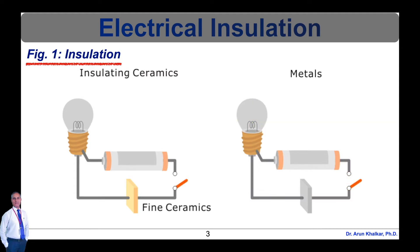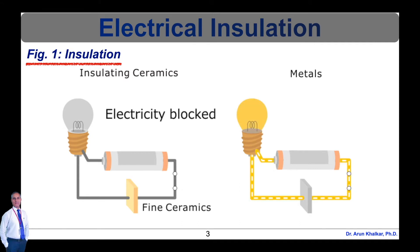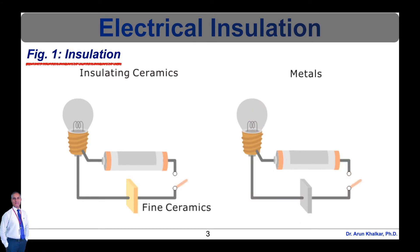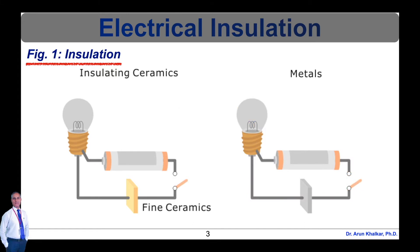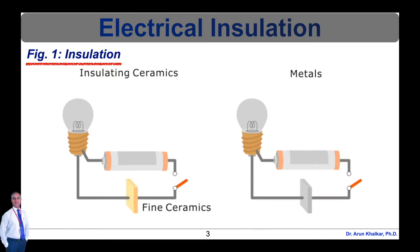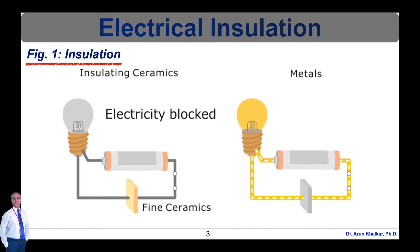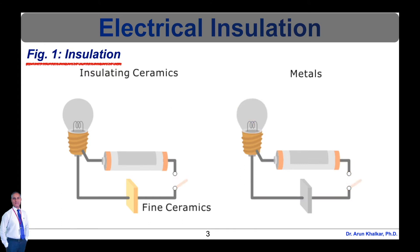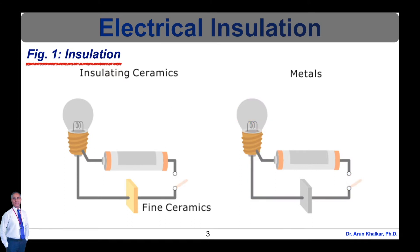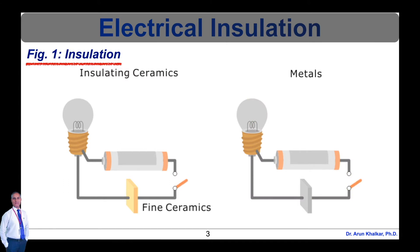An atom, the smallest unit of matter, is composed of a nucleus and electrons which orbit that nucleus. Whether a substance is an insulator or a conductor generally depends on the number of free electrons it possesses, which can be used to carry electric current. A substance with higher insulation properties is less conductive because it possesses fewer free electrons.